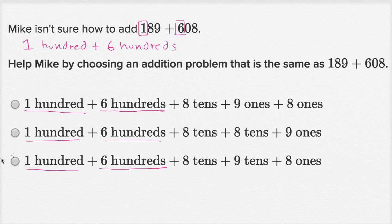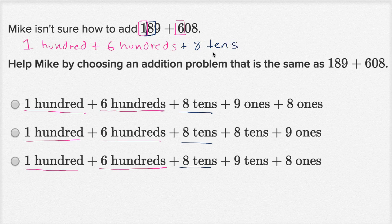And then all of them have eight tens. So they're actually all looking pretty similar up to that point. They all have eight tens. Where do they get that from? Well, in 189, this eight is in the tens place. So it represents eight tens.